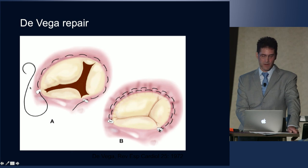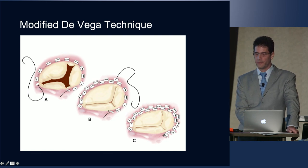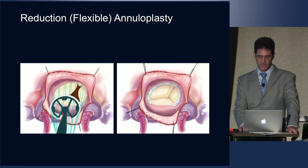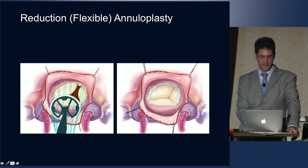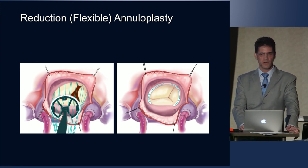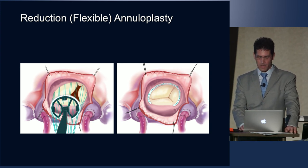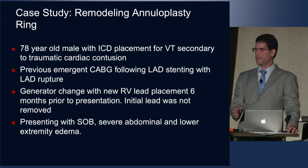The De Vega repair involves sutures through and through in the region where annular devices are placed. The modified De Vega repair has been shown to not hold up long-term in patients with severe annular dilatation. Typically we use annular devices such as rings or bands. The choice between flexible and rigid bands depends on surgeon preference, anatomy, and degree of dilatation — or a combination of the two.